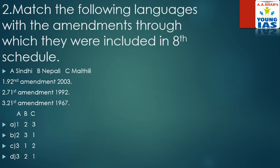Match the following languages with the amendments through which they were included in the 8th schedule. As we know, presently we have 12 schedules in our constitution, and the 8th one deals with languages. Here are 3 languages: Sindhi, Nepali, and Maithili. Sindhi was added in 1967 by the 21st amendment, Nepali was added in 1992 by the 71st amendment, and Maithili was added in 2003 by the 92nd amendment. So the correct option is D321.